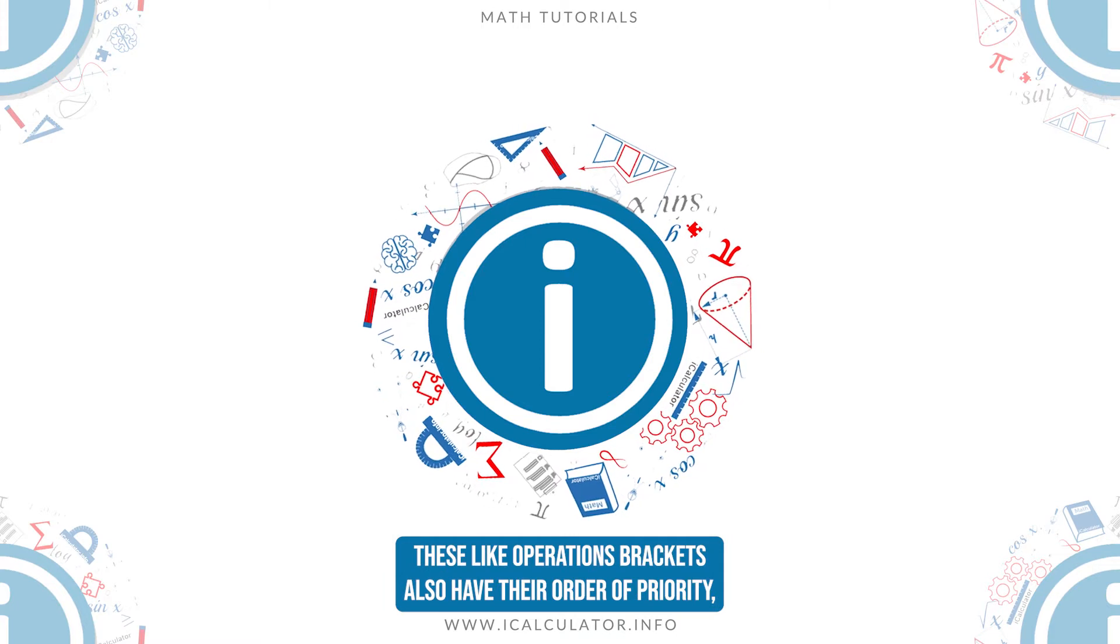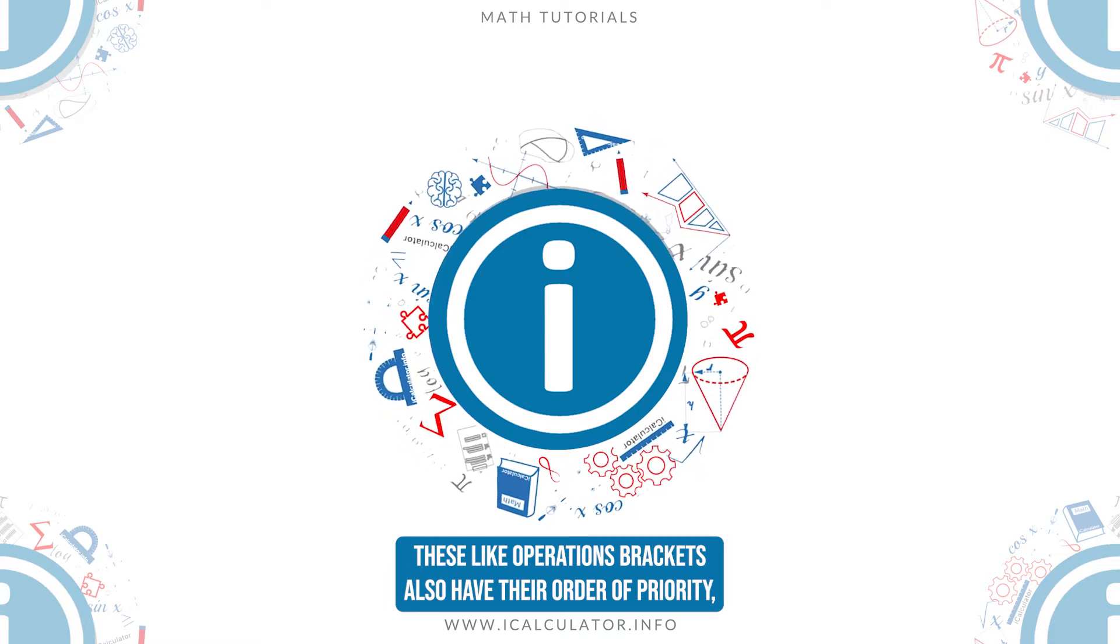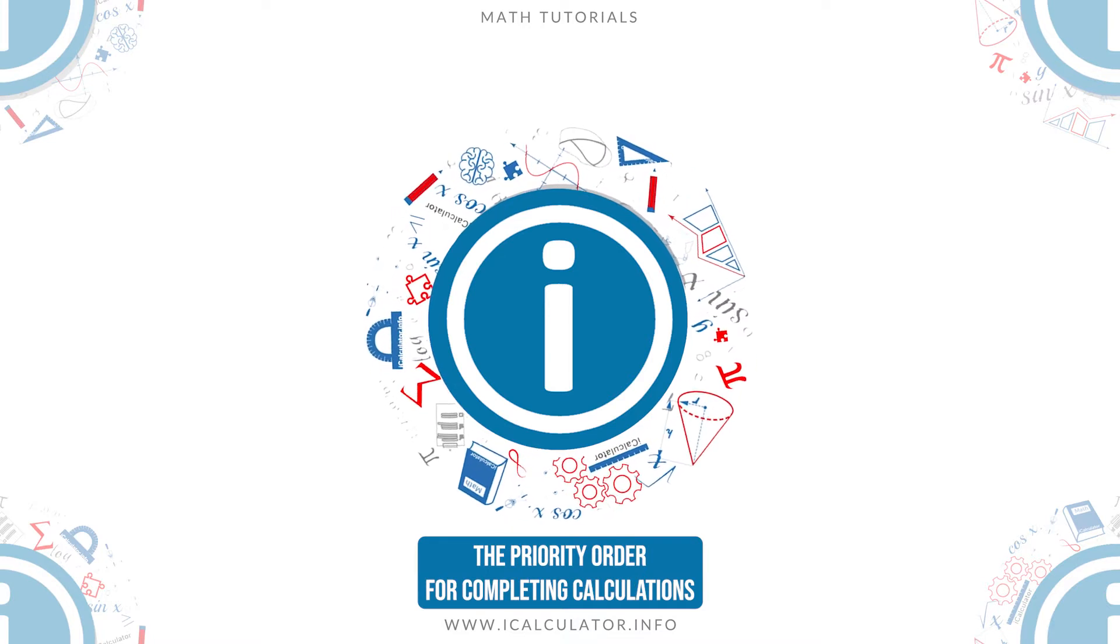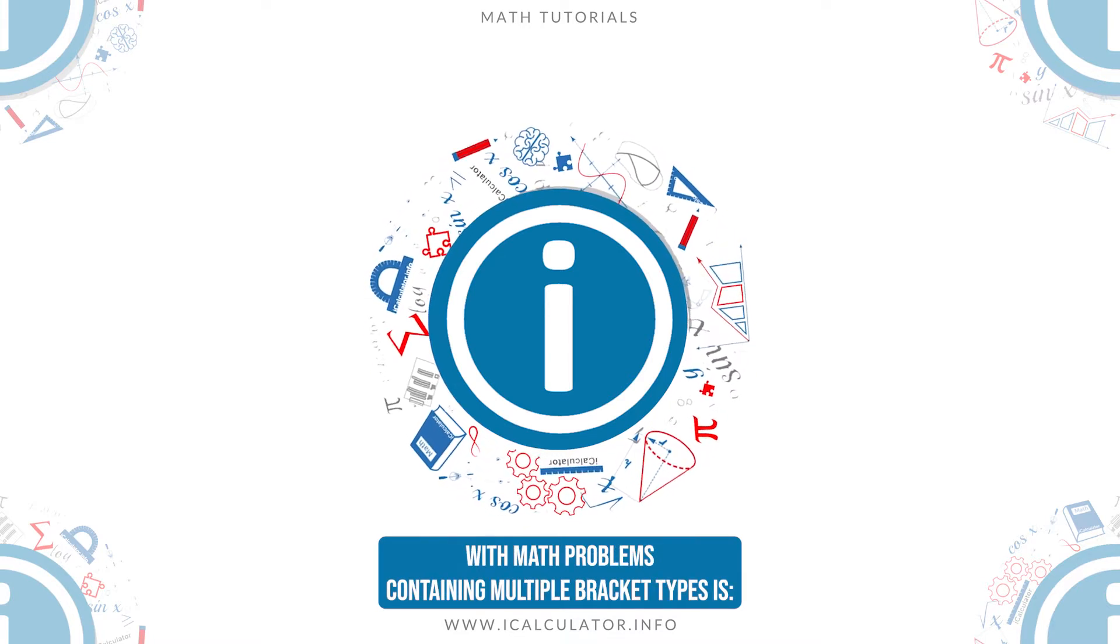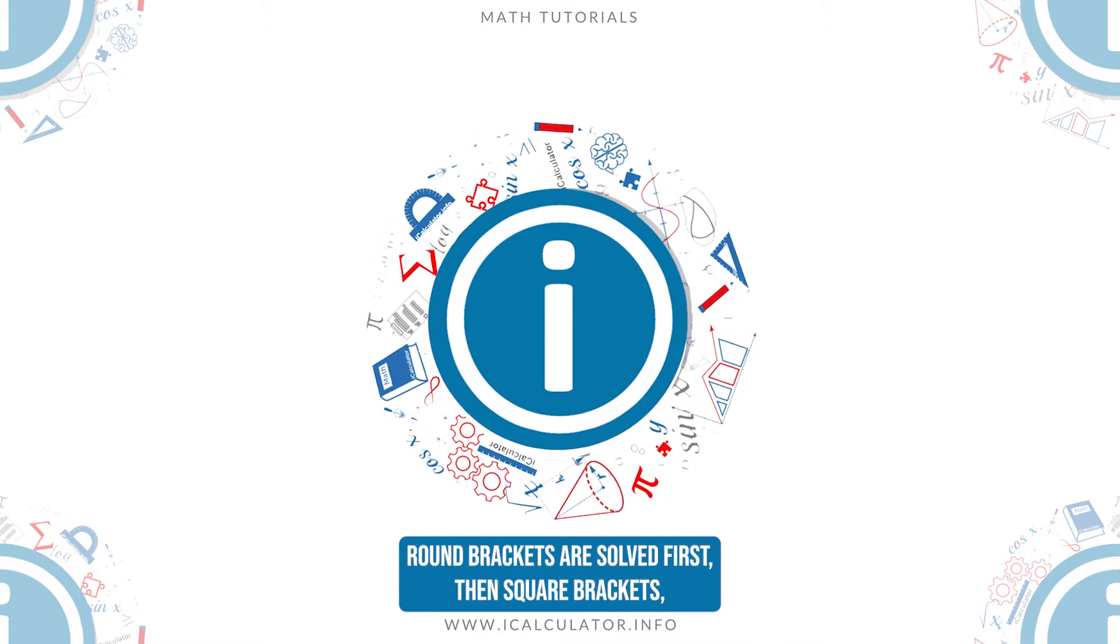These, like operations brackets, also have their order of priority. The priority order for completing calculations with math problems containing multiple bracket types is: round brackets are solved first, then square brackets and finally the curled ones.